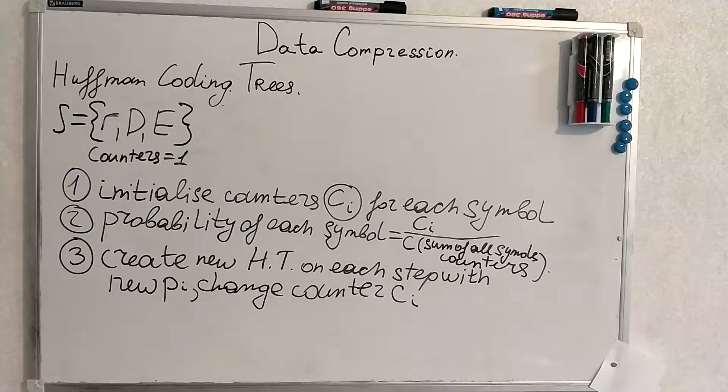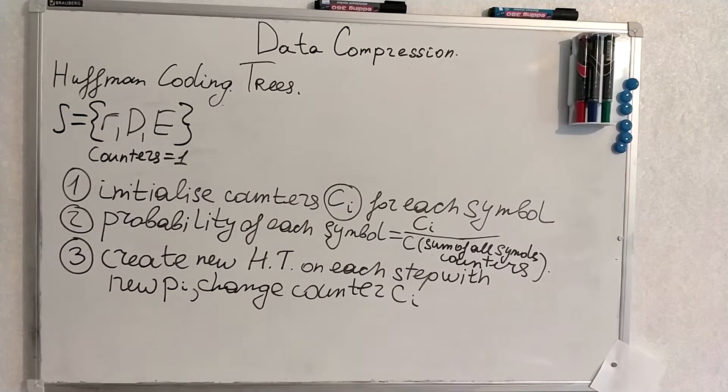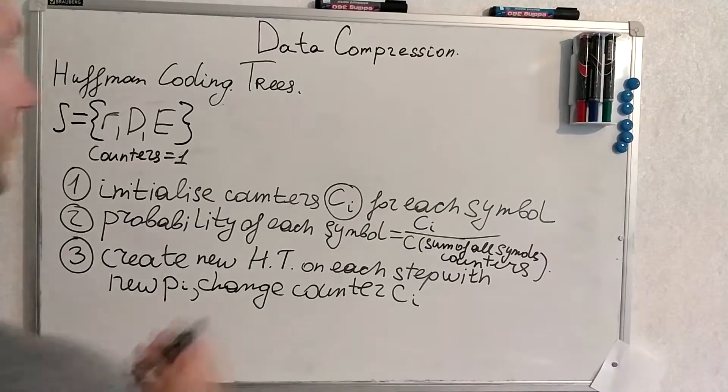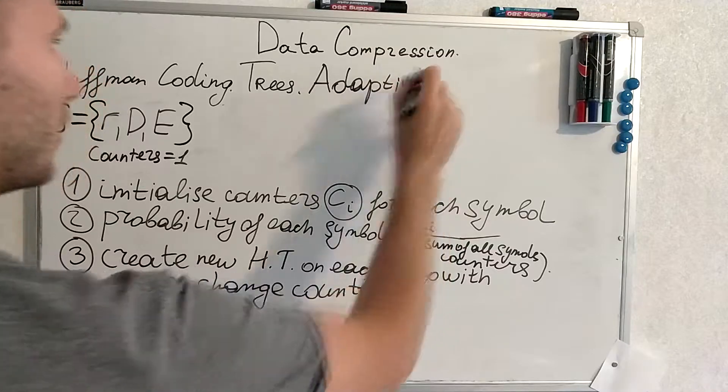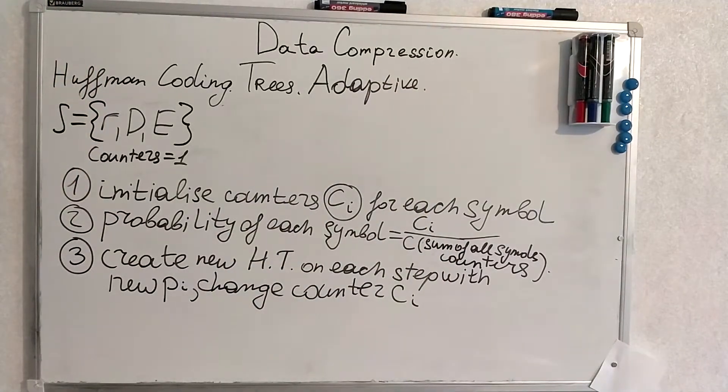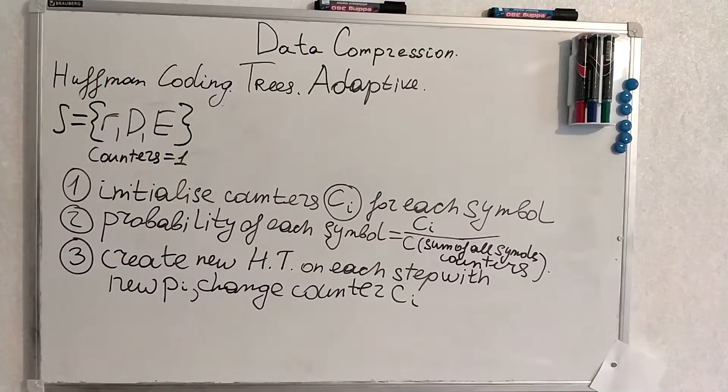Now we come to the concept of adaptive Huffman coding. So this algorithm is adaptive in such a manner that we have a stream of our source symbols and a Huffman tree will adapt to letters we face.